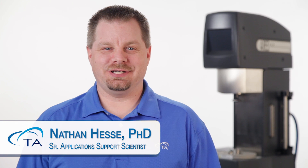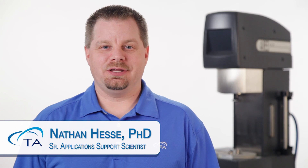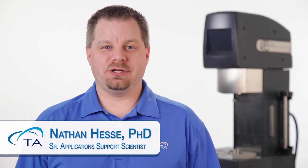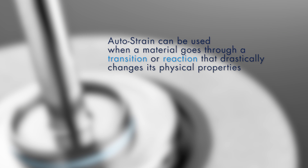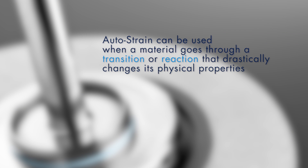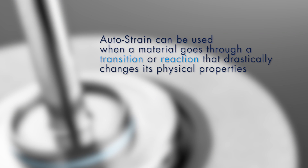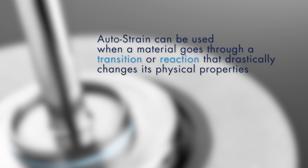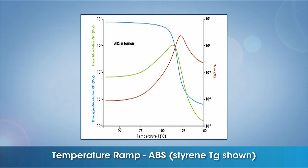Hello and welcome to another TA Tech Tip. In this Tech Tip we will demonstrate the Auto Strain functionality when using the Ares G2. Auto Strain can be used when a material goes through a transition or reaction that drastically changes its physical properties, like that observed through a glass transition, cure, or thermoset.